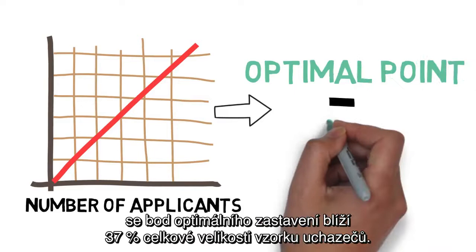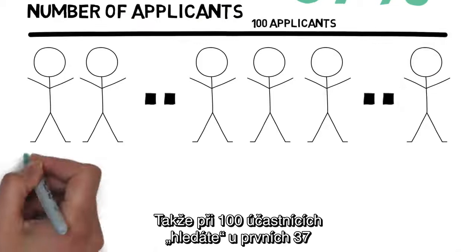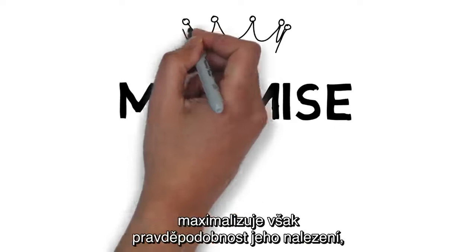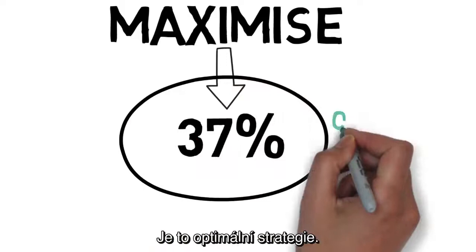So out of a hundred applicants, you look for the first 37 and then you enter leap mode. If you're interested in how they arrive at that number, check out the book. To be clear, this strategy doesn't guarantee you'll find the best candidate, but it does maximize your chance of doing so, giving you incidentally around a 37% chance of picking the best. It is the optimal strategy.